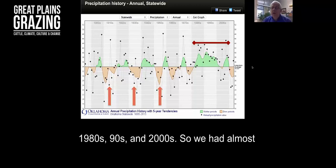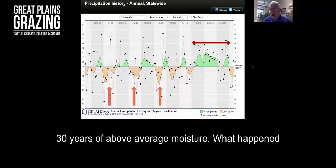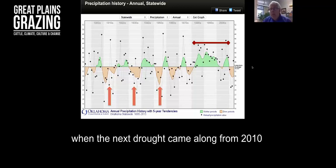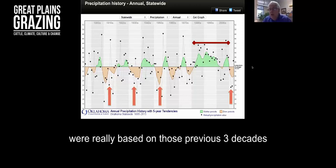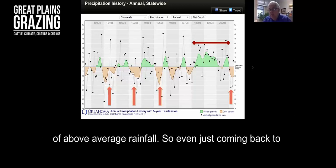In Oklahoma, the 1910s were very dry. Then we get into a period of extended moisture from the 1980s, 90s and 2000s. We had almost 30 years of above average moisture. What happened when the next drought came along from 2010 to early 2015 is people's expectations were really based on those previous three decades of above average rainfall.